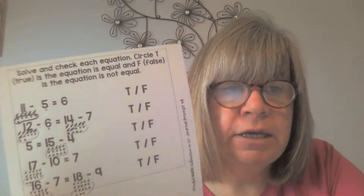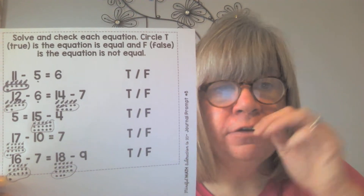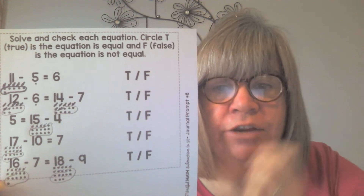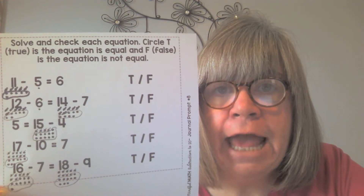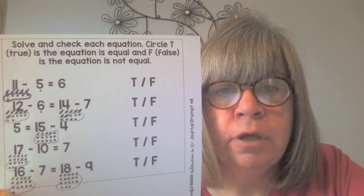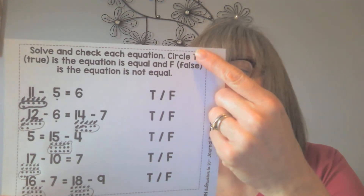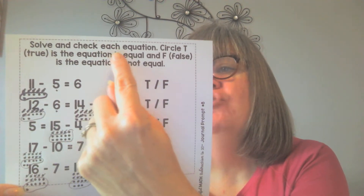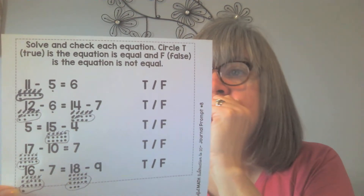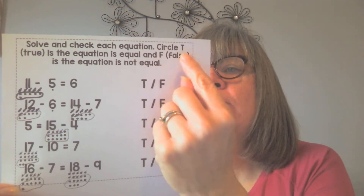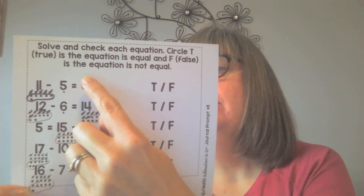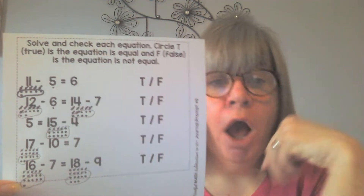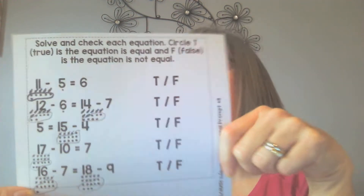The first thing you're going to do is this page which says 'solve and check each equation.' Remember an equation is an adding question or a takeaway question. Circle T, which stands for true, if the equation is equal, and F, which stands for false, if the equation is not equal.